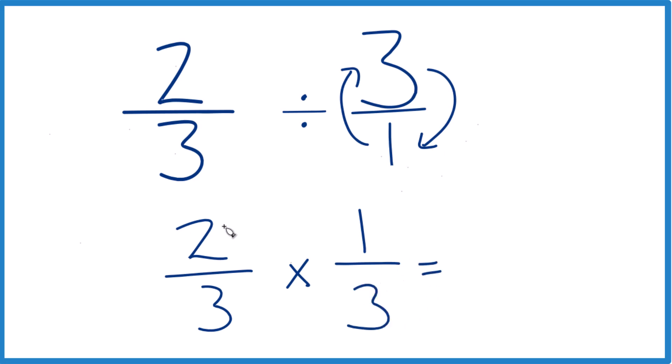Now with fractions, when we multiply, we multiply the numerators. Two times one, that's two. And then the denominators. Three times three is nine.